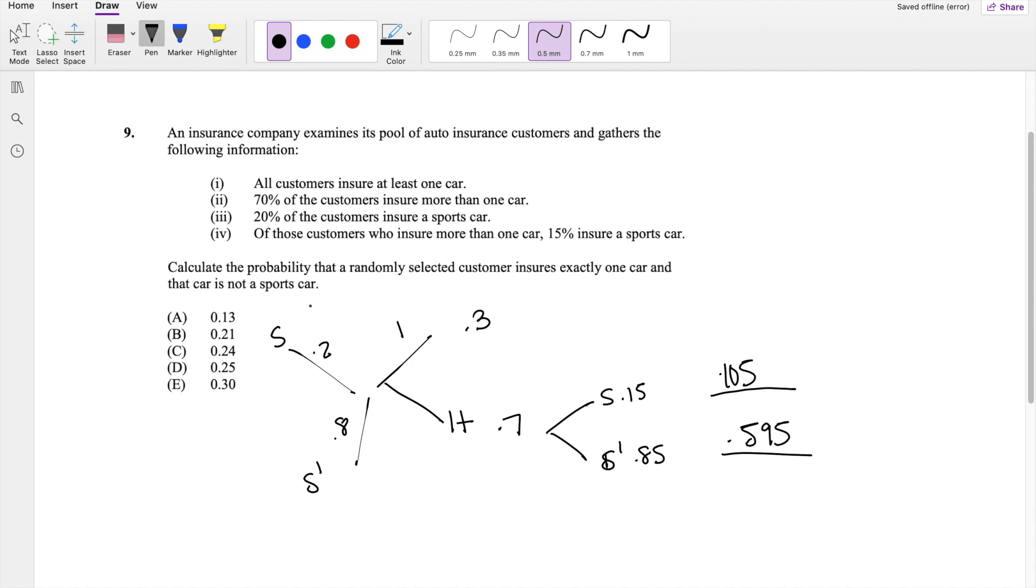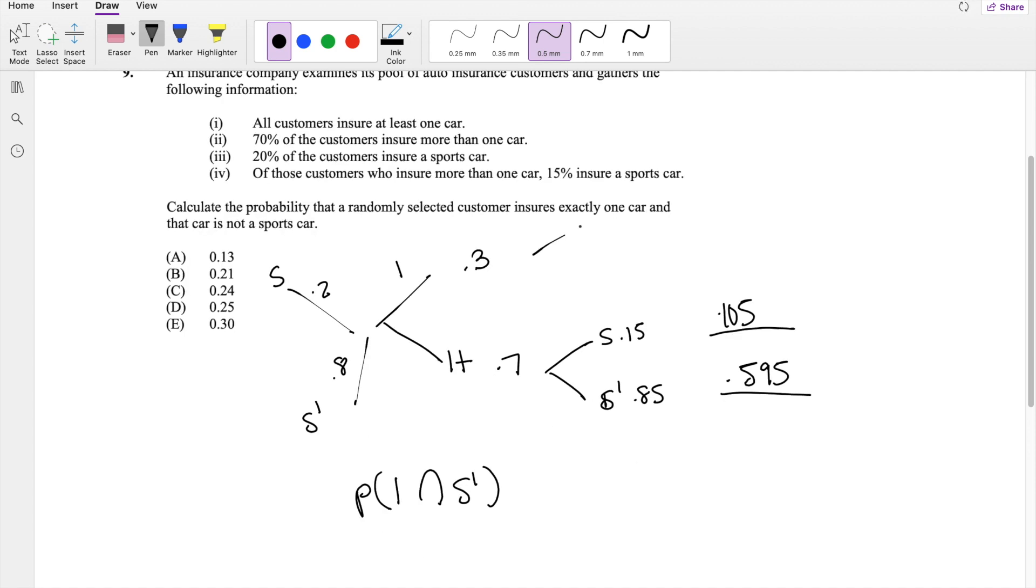Okay, but anyways, what are we looking for? Oh, calculate the probability that a randomly selected customer insures exactly one car and is not a sports car. So we're basically looking for this branch right here. If this is sports and this is not a sports car, we're looking for this branch.